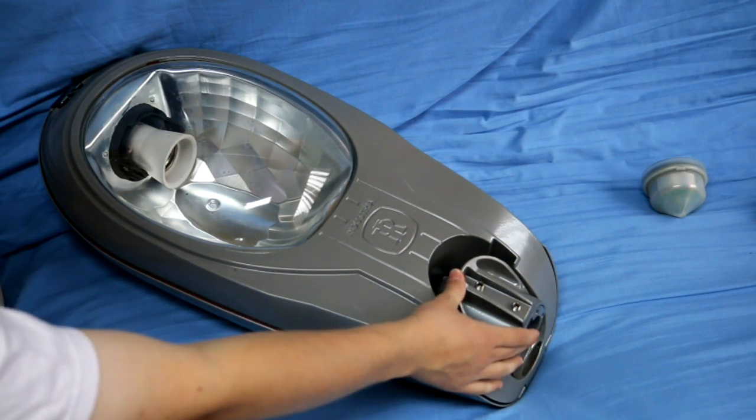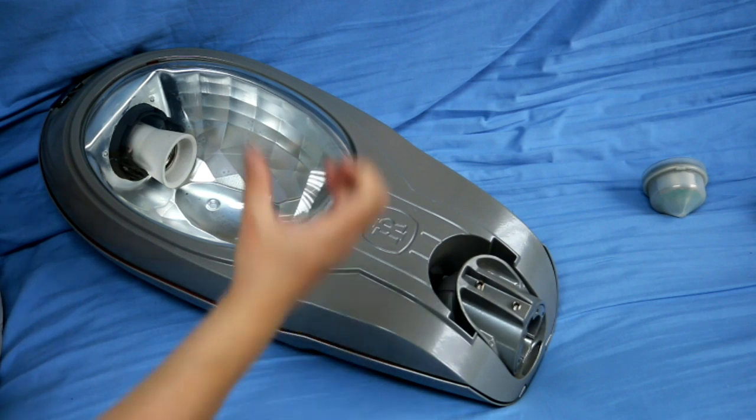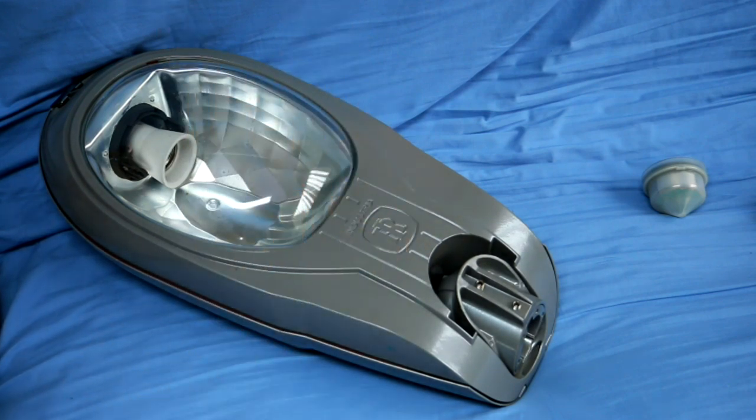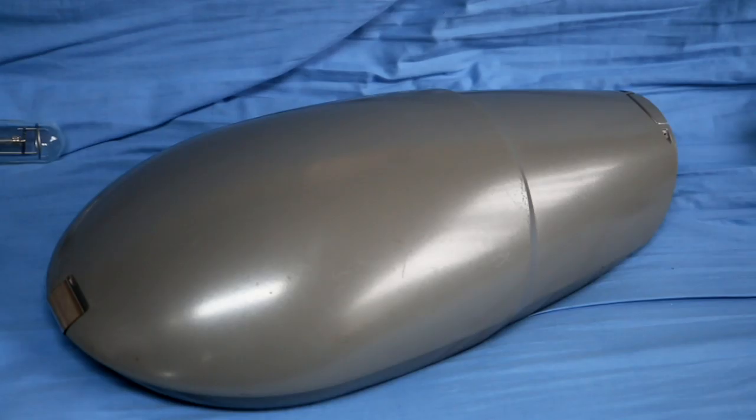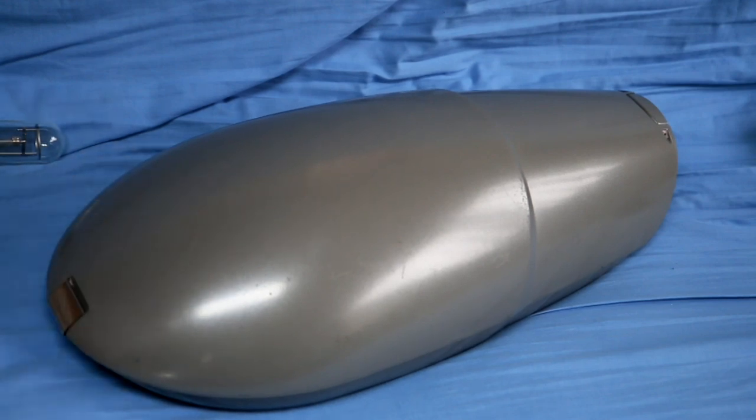But you can actually unscrew this and swap it round so it goes that way. That allows you to mount it directly on the post with no outreach arm. Obviously the whole thing is made out of pressure cast aluminium so it's very robust.